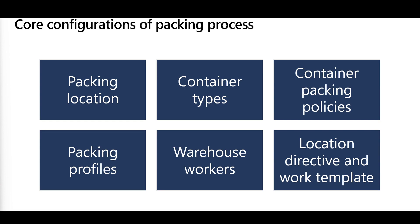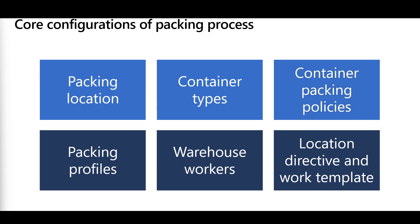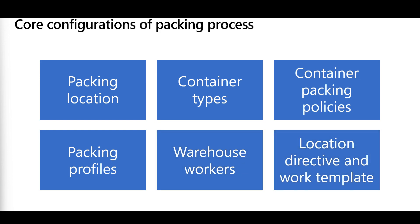Now let's review the required configurations for the packing process. First, we have to define the packing area or packing location. Then define the container types used in the packing station. Define and manage the container packing policies and packing profiles. Set the default options for the packers or warehouse workers. And last but not least, configure the warehouse core configurations like the location directive and the work template.